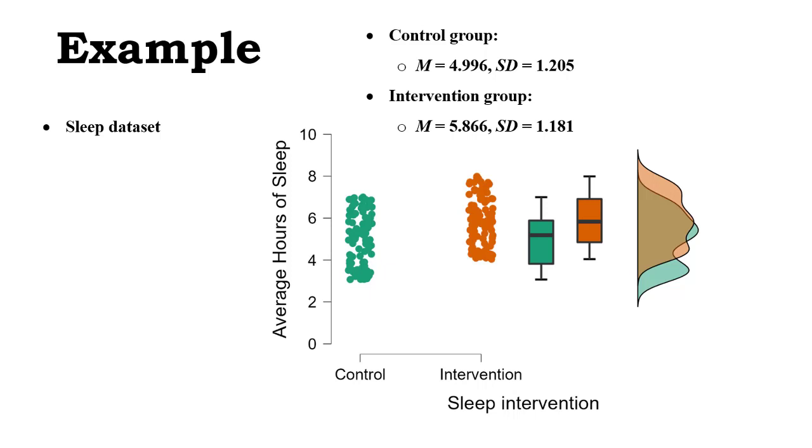Let's see the data. We've got the control group. The mean hours of sleep is 4.996 with a standard deviation of 1.205, whereas the intervention group has a mean of 5.866 and a standard deviation of 1.181. We can see the graph with the data in green for the control group, intervention in orange.